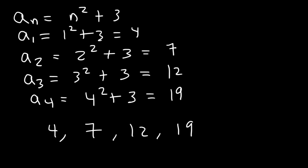Notice that there is no common difference. 4 and 7 differs by 3. 7 and 12 differs by 5. And 12 and 19 differs by 7. Because we don't have a common difference,